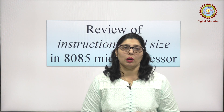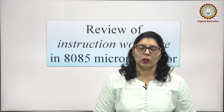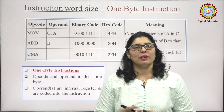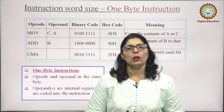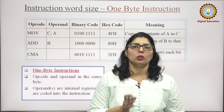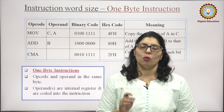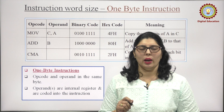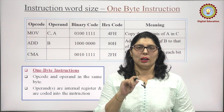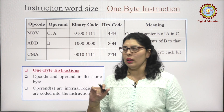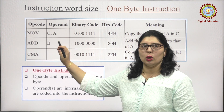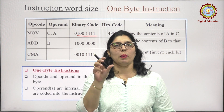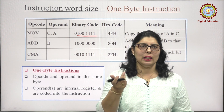We will review the instruction word size of the 8085 microprocessor, jo hum pichle kisi lecture mein kar chuke hai. 8085 ke instruction set ko hum three types mein baante hai: one byte instruction, two byte, and three byte instruction. One byte instruction woh hai jo ek single byte mein carry honge. For example, MOV C,A has a single binary code, aur is binary code ko hum ek hi baar ek instruction mein daalenge.